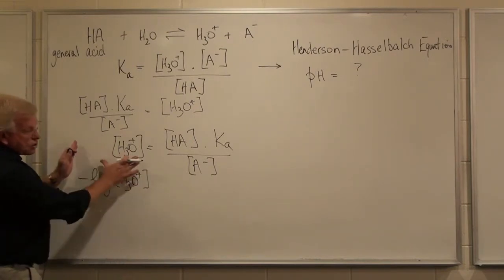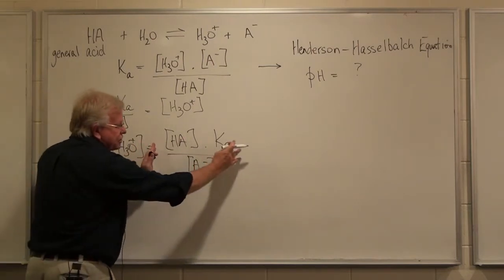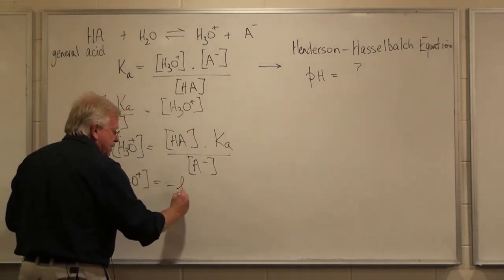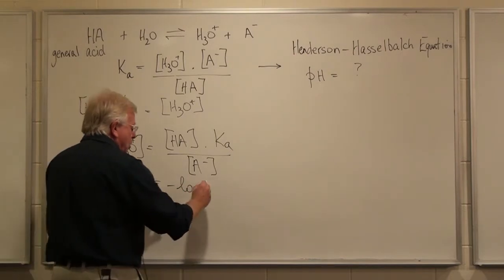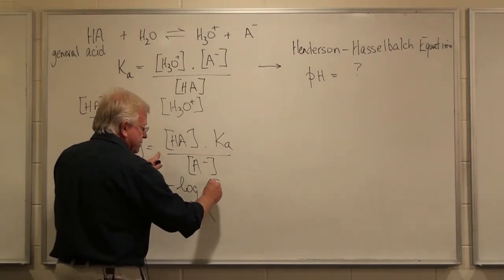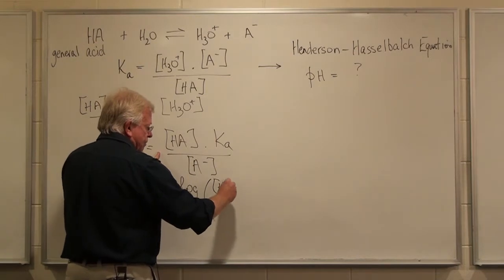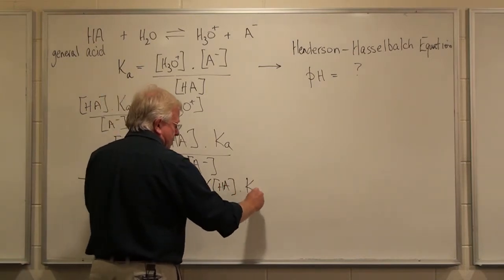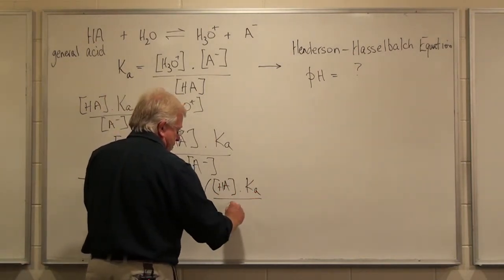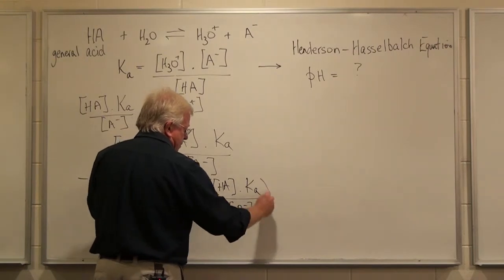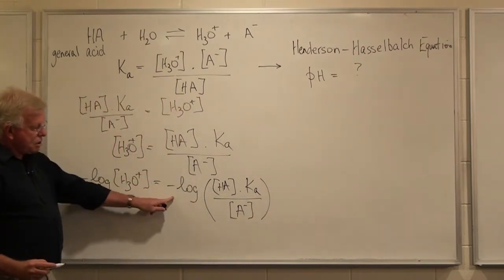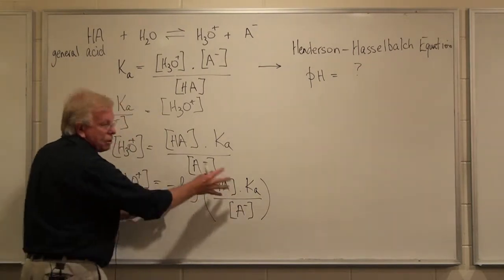So if I take minus the log of this side, I've got to take minus the log of this side. So that's equal to minus the log of, and I'll put it all in brackets, like so, so I'm taking minus the log of that whole expression.